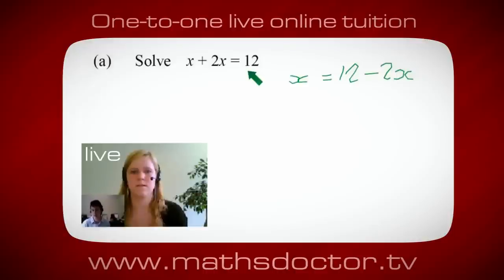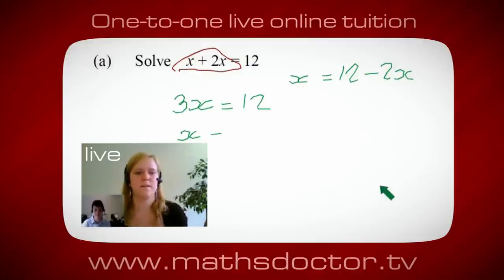OK, so a lot of the time we want to get x by itself, but what we want to do first is get all of these x's together. So can you see anything we can do with this? Oh, OK, it's 3x, isn't it? Yeah, absolutely. So 3x equals 12. Oh, and so x equals 4. Brilliant. Spot on. Well done.